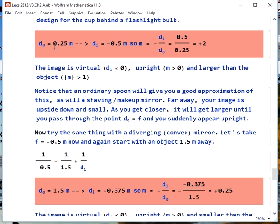If we keep moving closer, we get to 0.25 meters. The image distance is now negative 0.5 meters. Our magnification is now plus 2. This means you have a virtual image, since DI is less than 0. It's upright, since M is greater than 0, and it's larger than the object, since the absolute value of M is greater than 1. You can try this out with an ordinary spoon, because it will act like this. Very far away, you'll see an image of yourself upside down and small. You get closer and closer, and then suddenly you flip upright, and it starts to be magnified. This is the way shaving mirrors, makeup mirrors work.